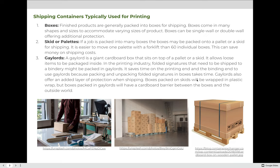Skids or pallets: if a job is packed into many boxes, the boxes must be packed onto a pallet or a skid for shipping. It is easier to move one pallet with a forklift than 60 individual boxes, which can save money on your shipping costs. There are many cartons or boxes packed onto skids that can be lifted with a forklift and put onto the back of a truck or moved around a warehouse for storage.